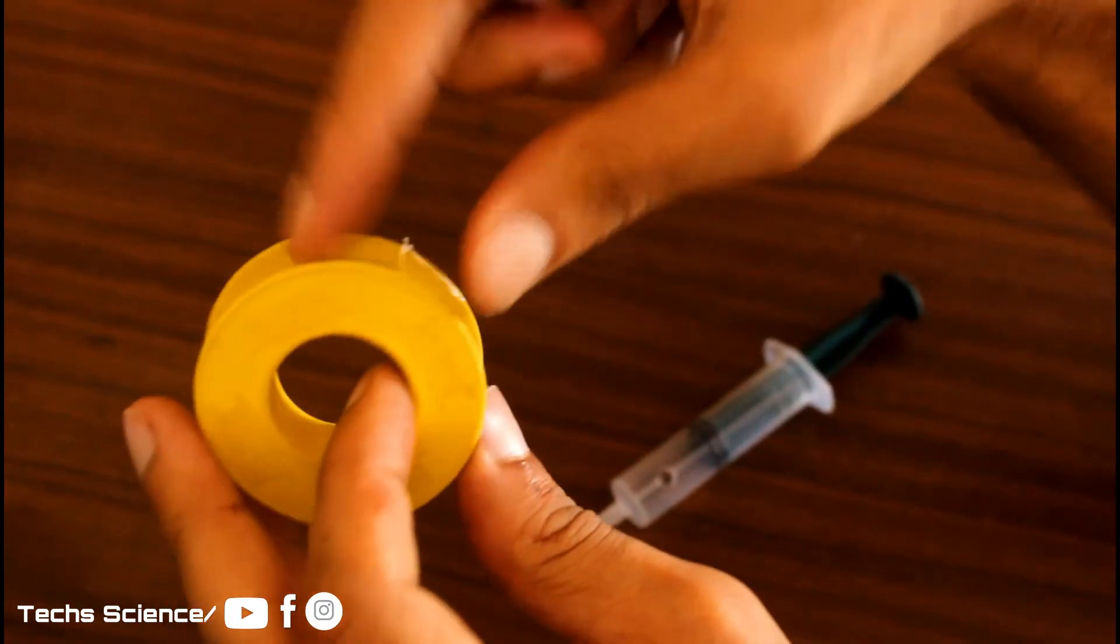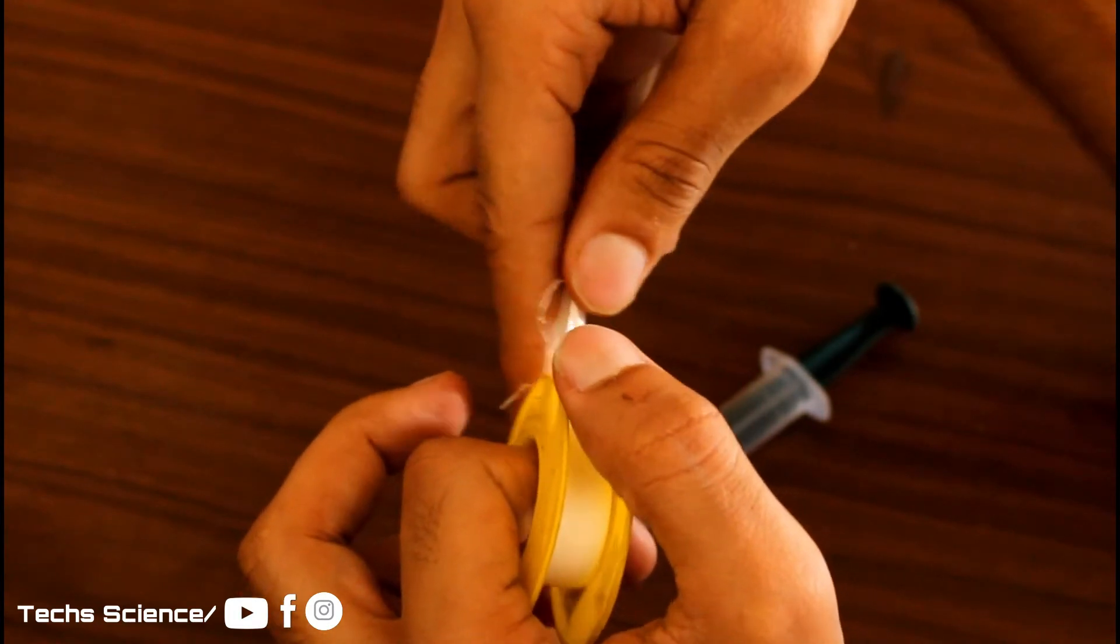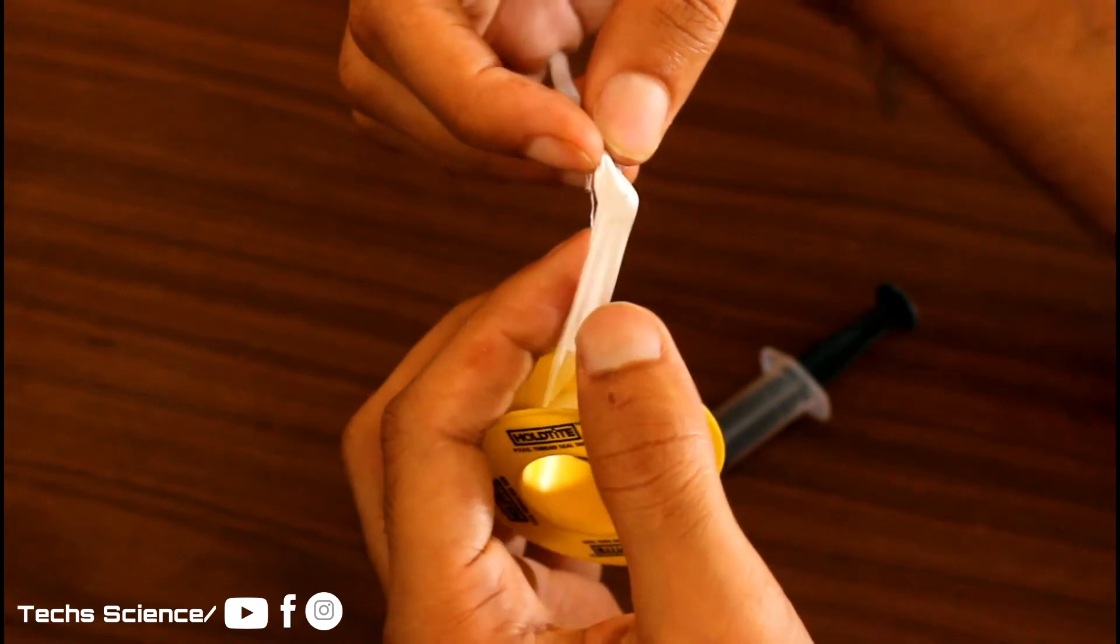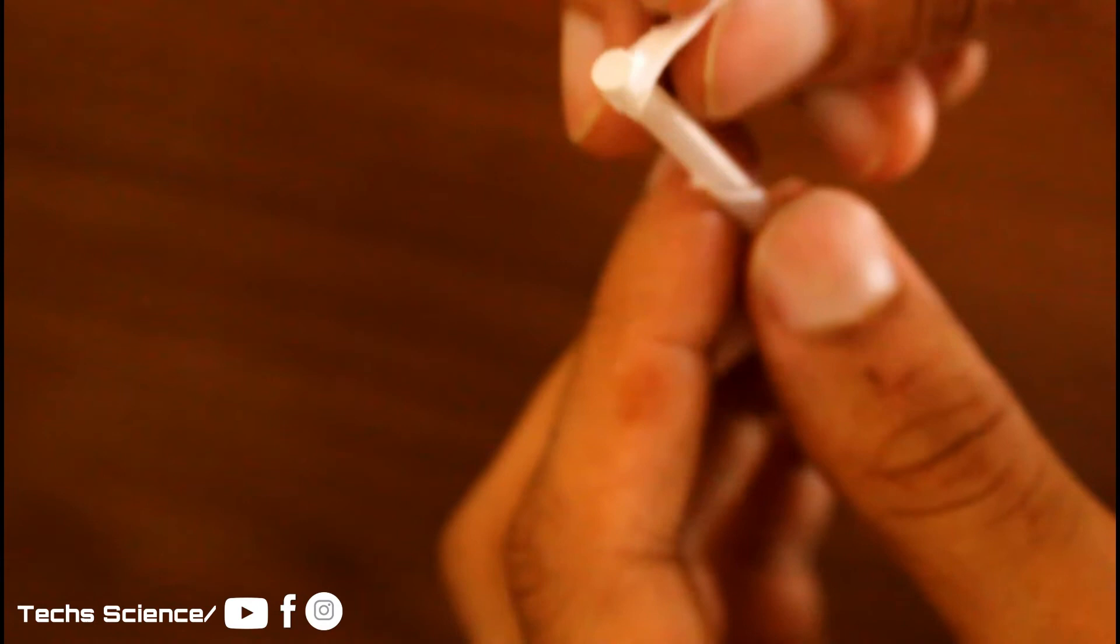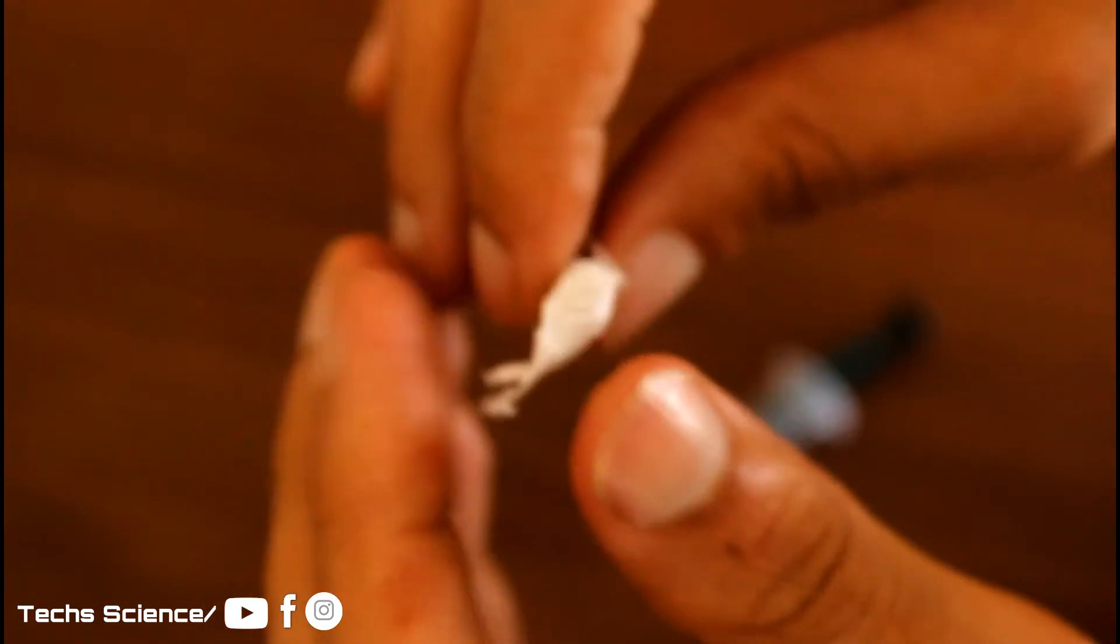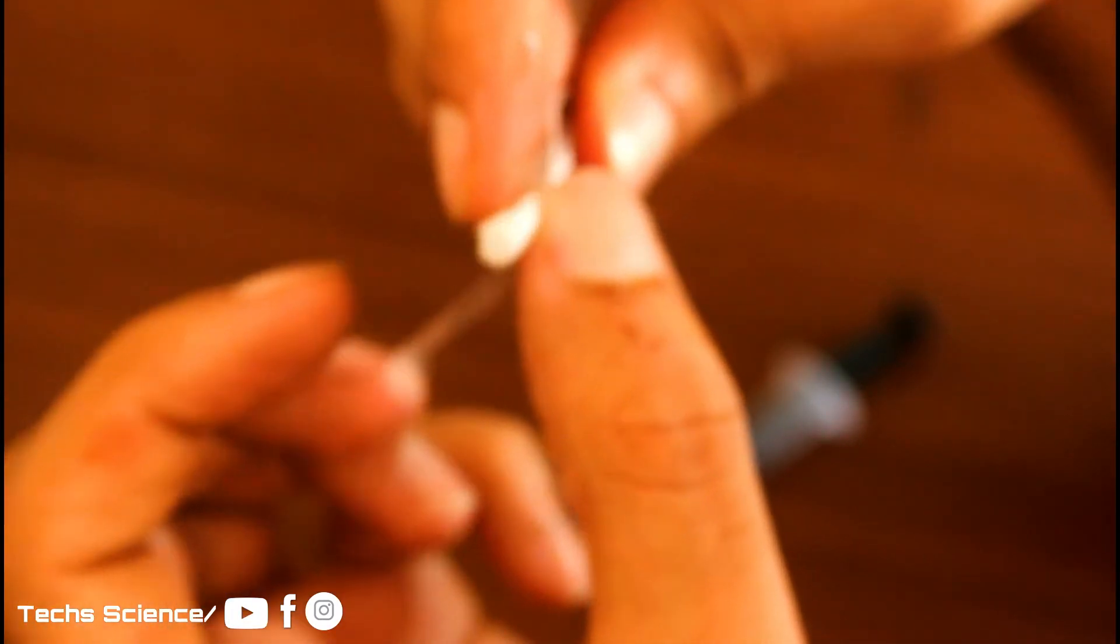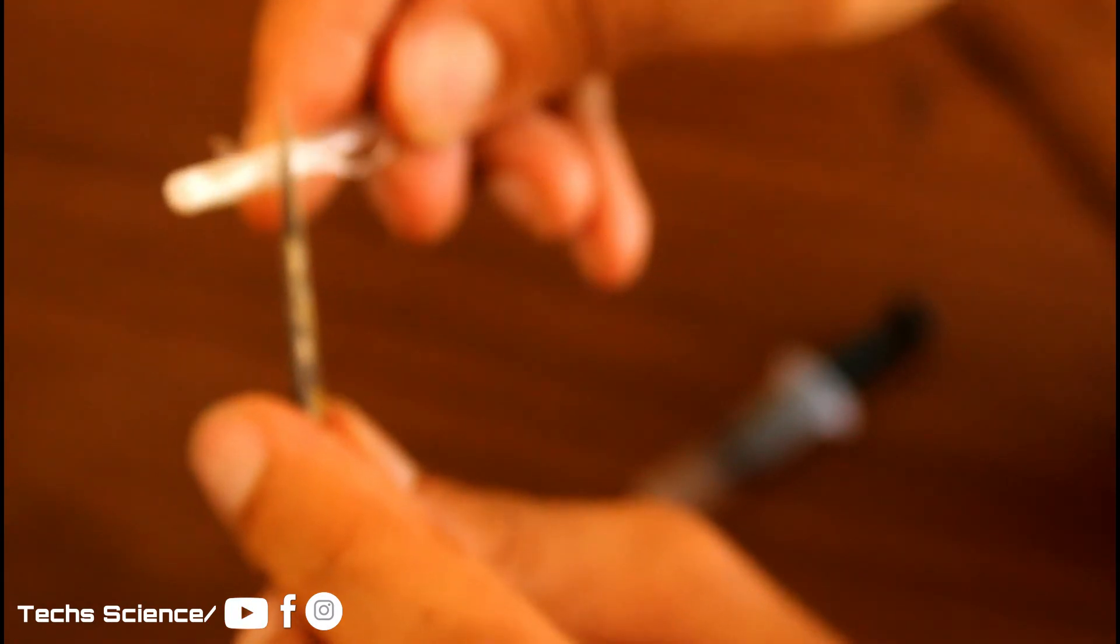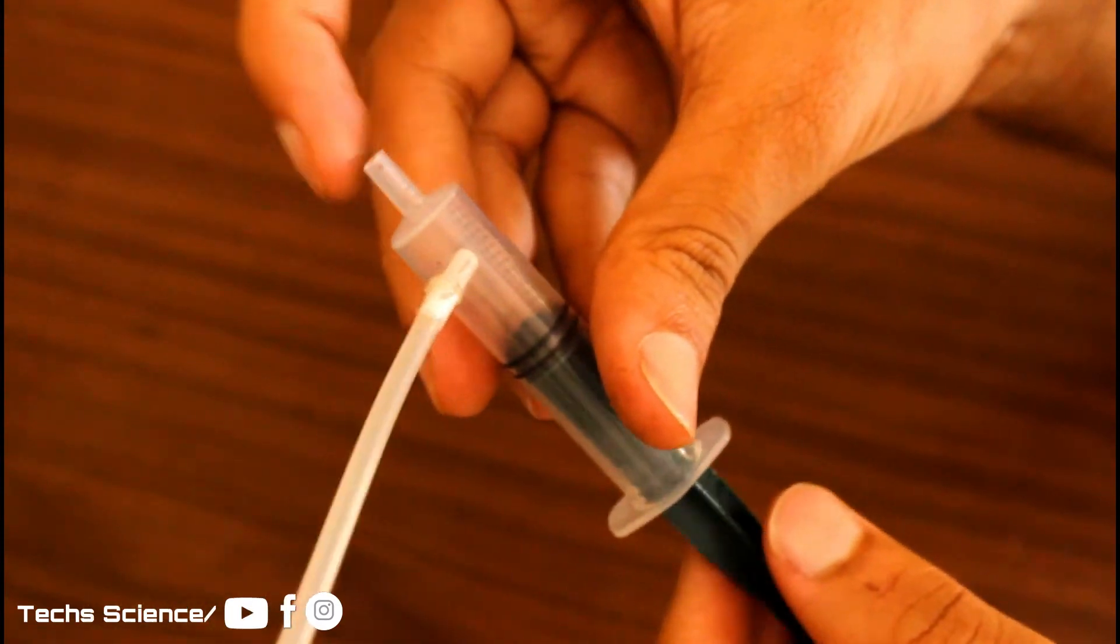I will put a teflon tape on this pipe to make a one-way valve. I will keep a small gap to allow the air going out and block the air coming in this pipe.